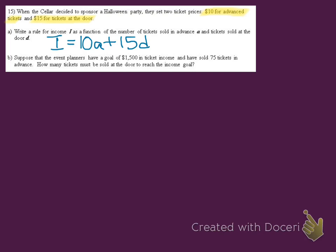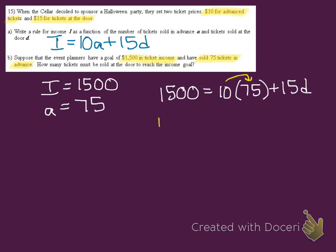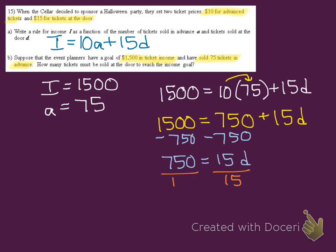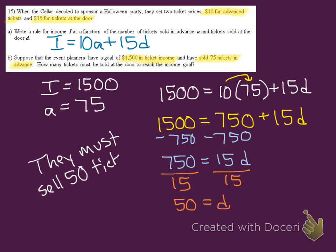On letter B, they give us some specific information to plug into our rule. They give us that the income is $1,500 and that the number of advance tickets is 75. So we'll replace the letter I and the letter A with those numbers, and then use that equation to solve for D. We end up with a result of D equals 50. This means they must sell 50 tickets at the door to meet their income goal of $1,500.